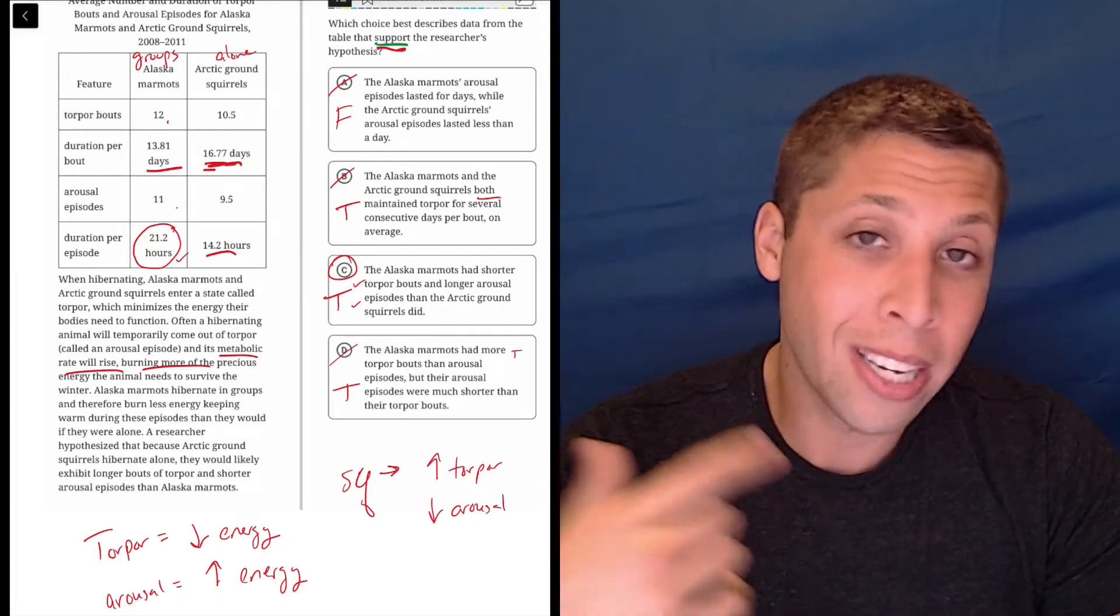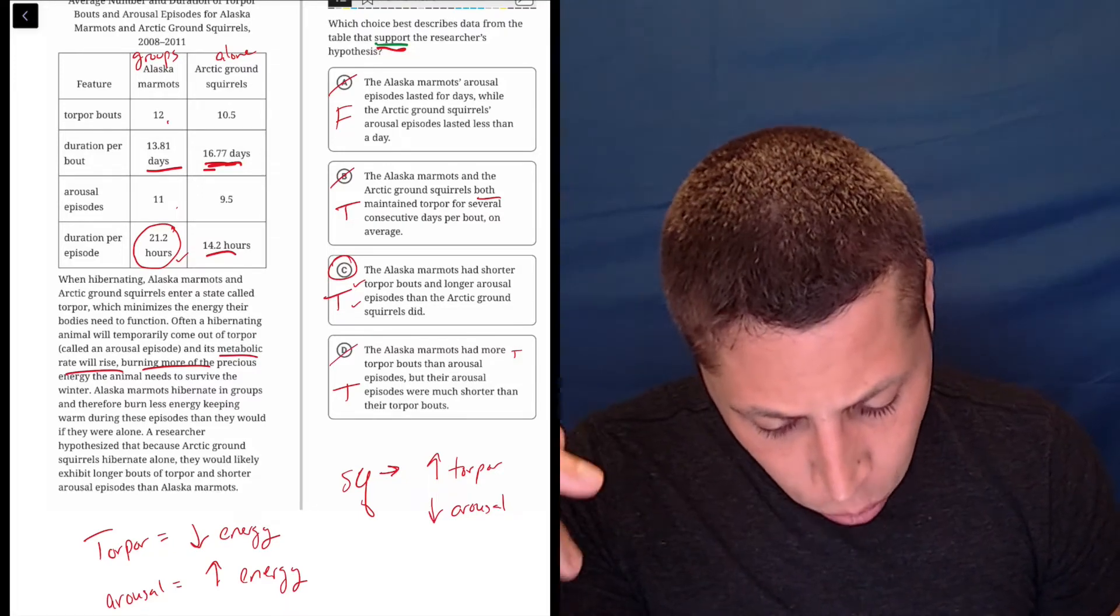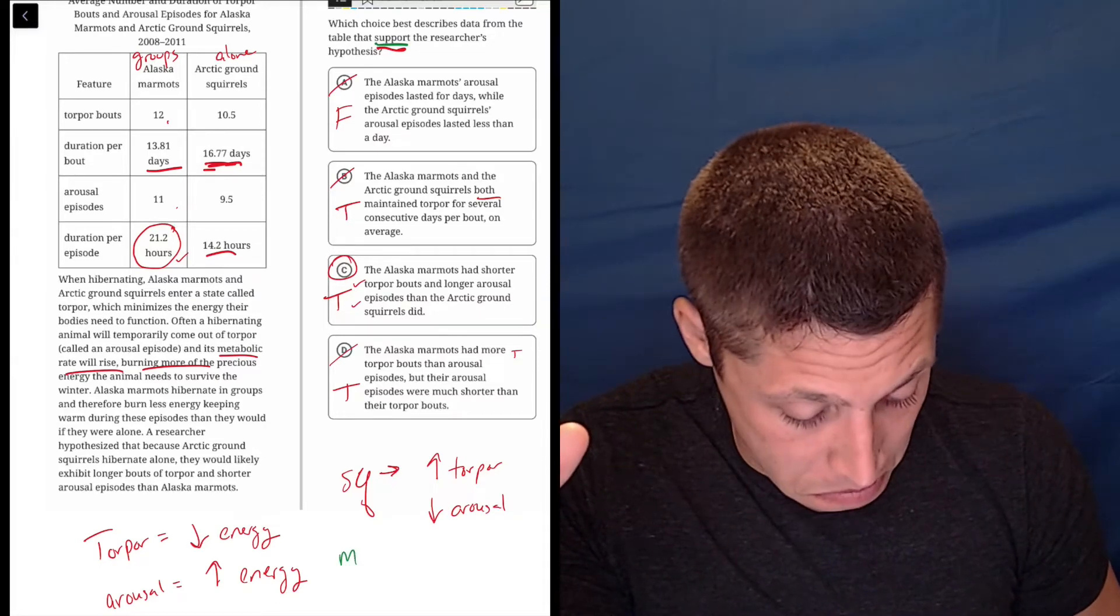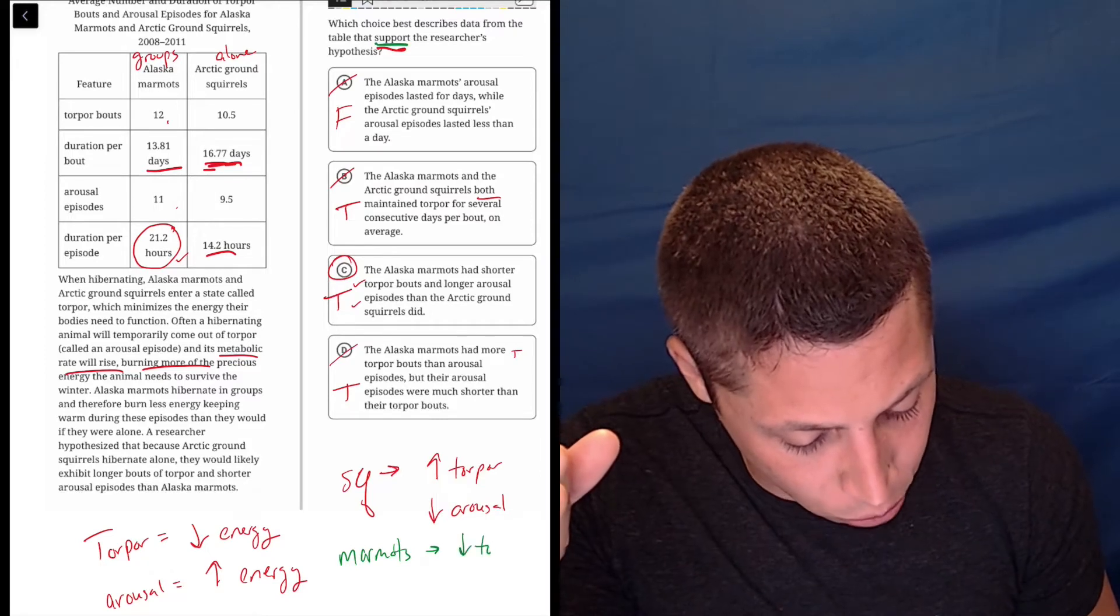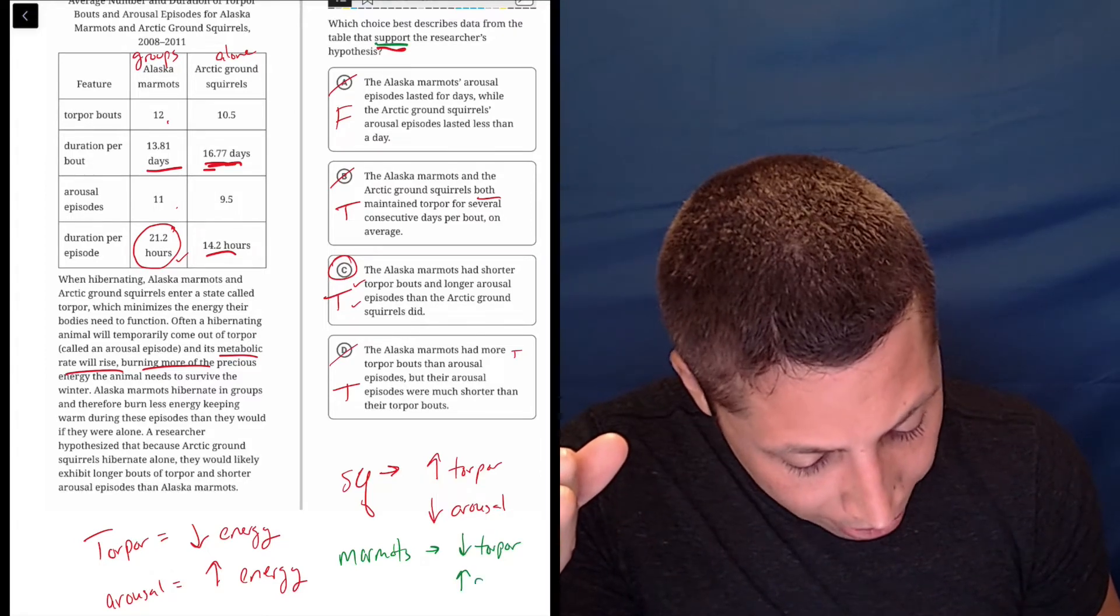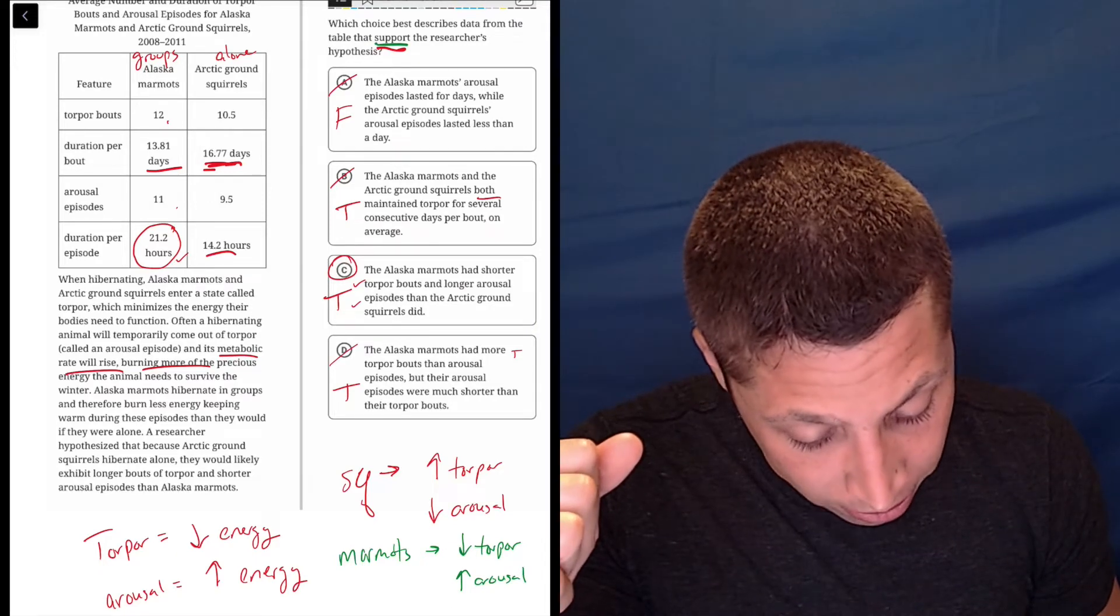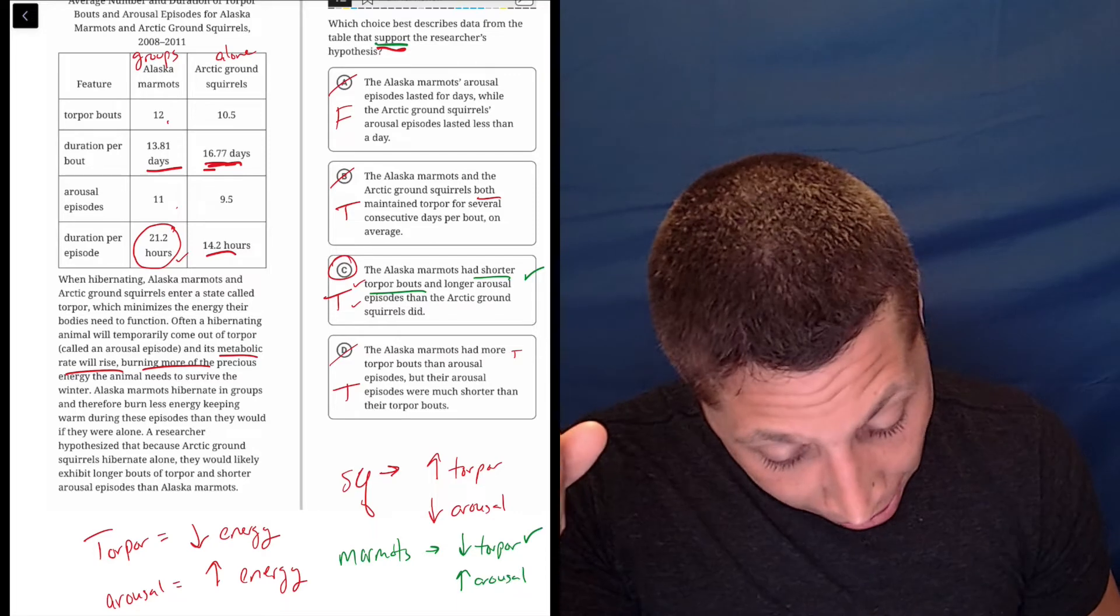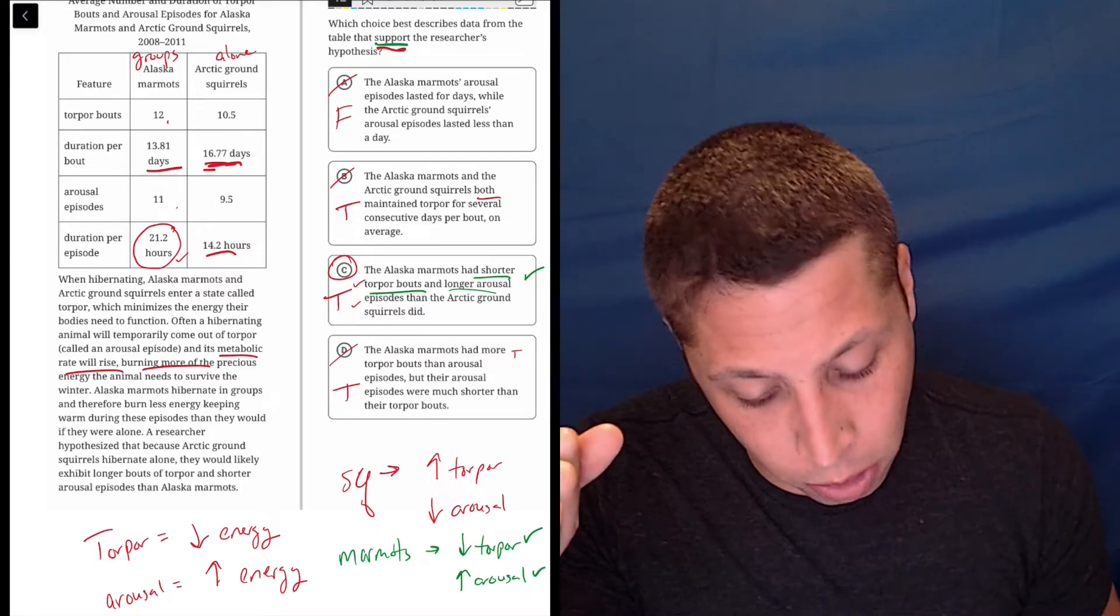But we can prove it using arrows, my favorite thing. So what did they say about the squirrel? The squirrel is going to have high torpor and low arousal. So marmots then should have the opposite, low torpor and high arousal. So what does it say in choice C? The marmot had shorter torpor, so check, right? And longer arousal, longer arousal than the arctic ground squirrel. So it checks.